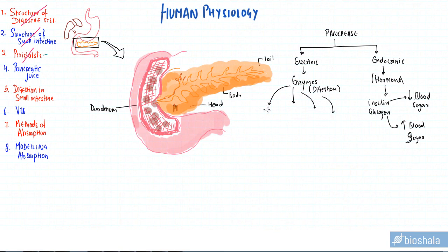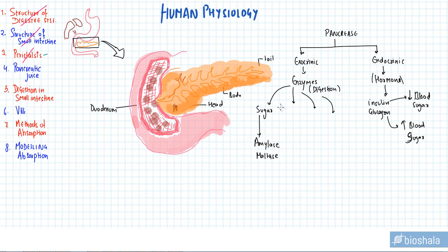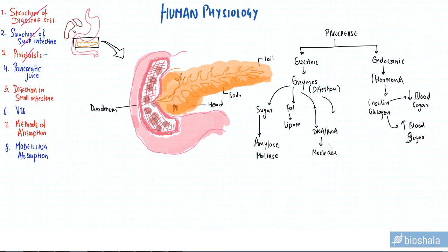There are different biomolecules present in food. To digest sugars, the pancreas secretes pancreatic amylase and maltase. Maltase acts on maltose, and amylase acts on amylose. For fat, it secretes lipases. For DNA or RNA, it secretes nucleases — specifically exonucleases, which are one of the two types of nucleases along with endonucleases.